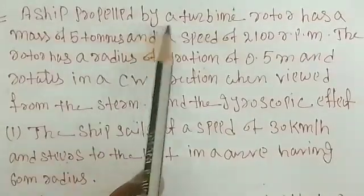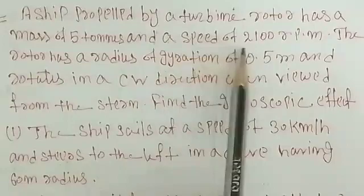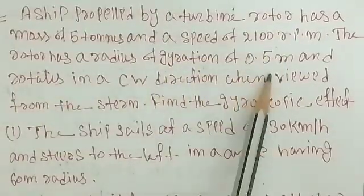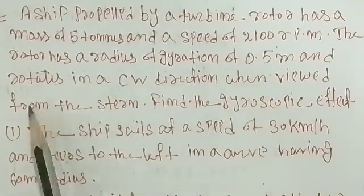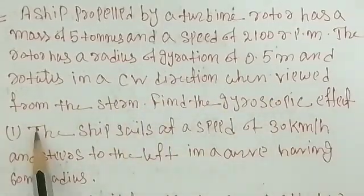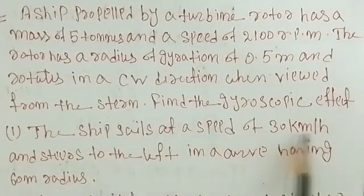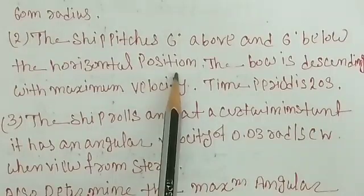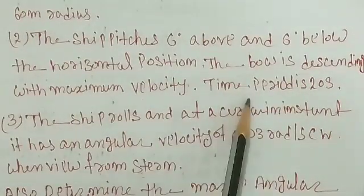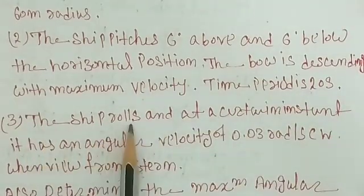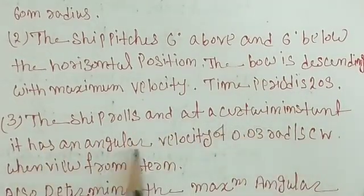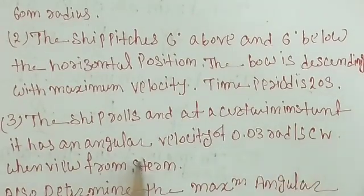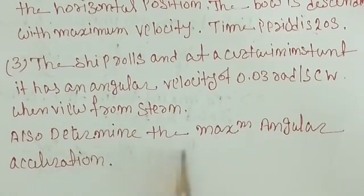We have a problem on the screen. A ship propelled by a turbine rotor has a mass of 5 ton and a speed of 2100 RPM. The rotor has a radius of gyration of 0.5 meter and rotates in a clockwise direction when viewed from the stern. Find the gyroscopic effect. First case: the ship sails at a speed of 30 km per hour and steers to the left in a curve having 60 meter radius. Second case: the ship pitches 6 degrees above and 6 degrees below the horizontal position, with the bow descending at maximum velocity and time period of 20 seconds. Third case: the ship rolls and at a certain instant has an angular velocity of 0.03 radian per second clockwise when viewed from the stern. Also determine the maximum angular acceleration.